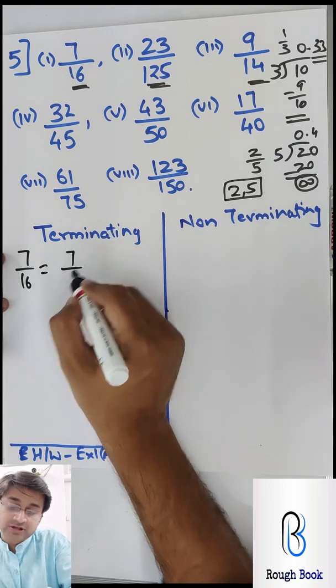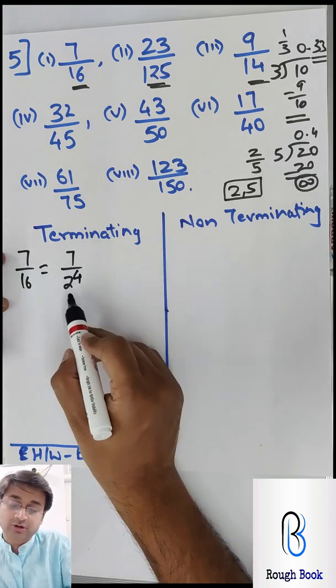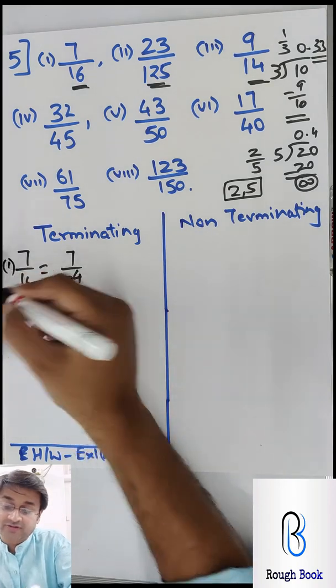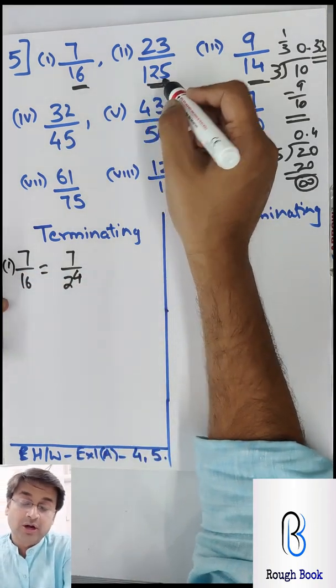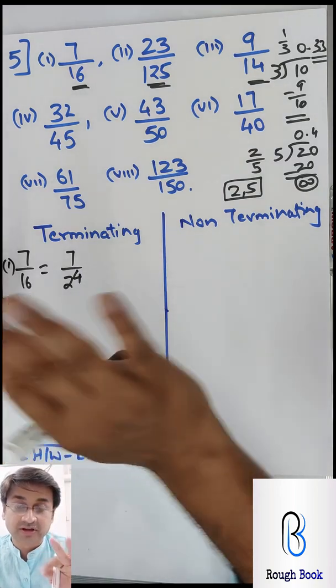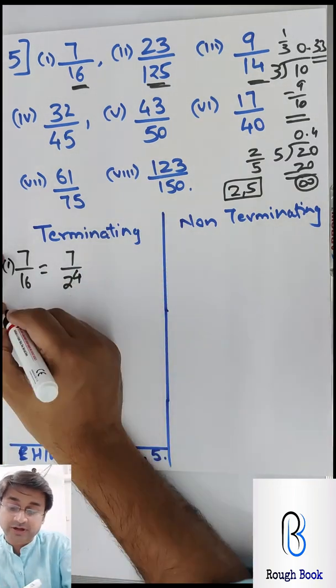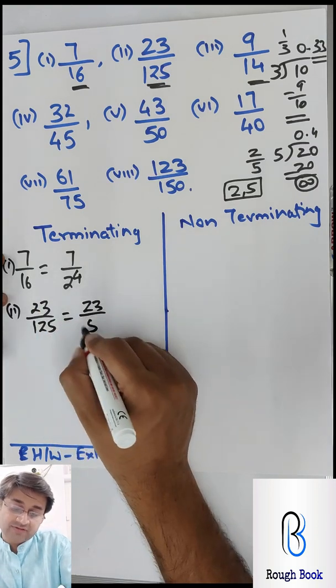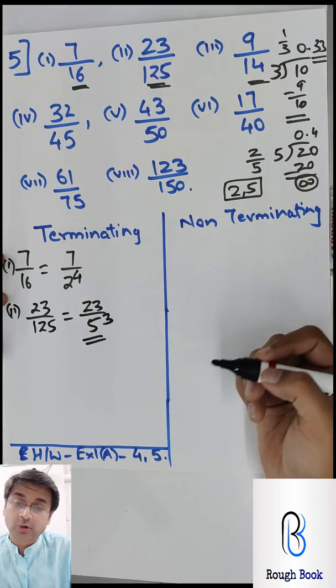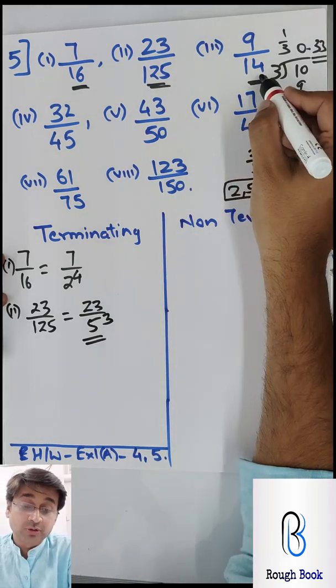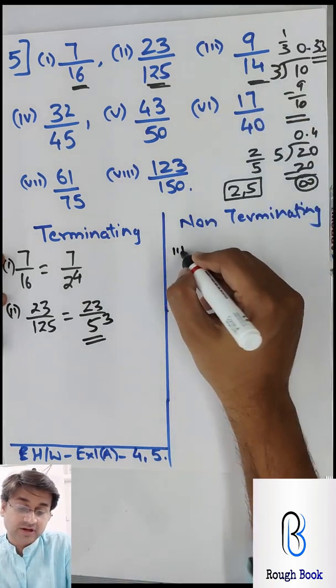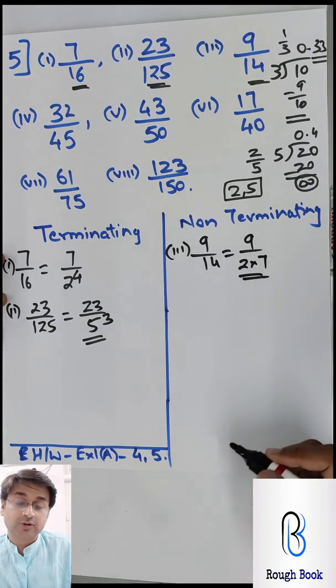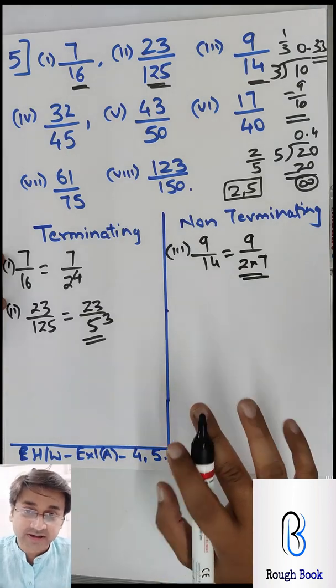For example, 7 by 16. So it will become 7 by 2 raise to 4. So all 2's, and therefore terminating. So that is your first one. Do you understand? 125 - we know 125 is 5 into 5 into 5. We are not bothered about the numerator. So you write over here 23 by 125, 23 by 5 cube, and therefore non-terminating. 9 by 14 we know is 2 by 7. So right over here 9 by 14, 9 by 2 into 7, and therefore non-terminating. Do you understand it?